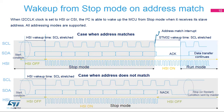The I2C peripheral supports wake-up from stop mode on address matches. To do this, the I2C peripheral clock must be set to the HSI-16 oscillator. Only the analog noise filter is supported when the wake-up from stop feature is enabled. All addressing modes are supported. When the device is in stop mode, the high-speed internal oscillator is switched off. When a start condition is detected, the I2C peripheral enables the high-speed internal oscillator, which is used to receive the address on the bus.